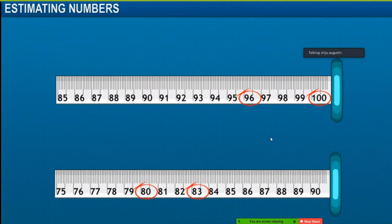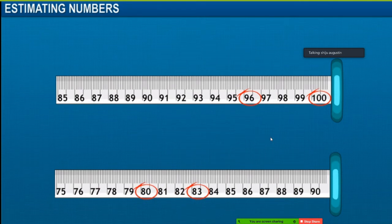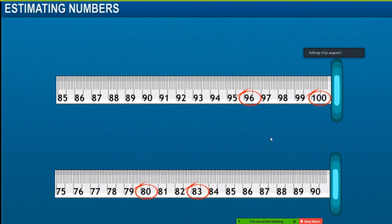The numbers 96, 97, 98, and 99 are closer to 100 than to 90, so we round them off to 100. 95 is equidistant from both 90 and 100. Therefore, as a common practice, 95 is rounded off as 100.